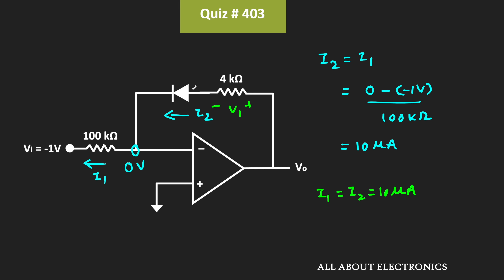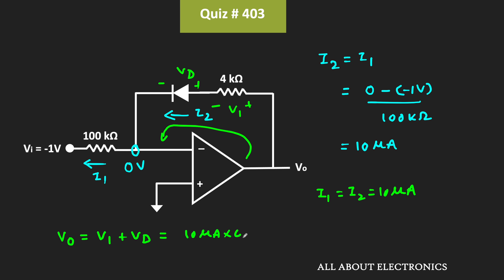Let's say the voltage drop across the 4kΩ resistor is equal to V1, and the voltage drop across the diode is equal to Vd. If we apply KVL in this loop, then the output voltage Vout is equal to V1 plus Vd. That is equal to 10μA times 4kΩ plus Vd. That means Vout is equal to 40mV plus Vd. To find the output voltage, we just need to find Vd.